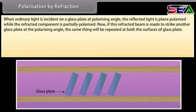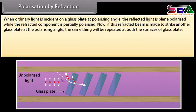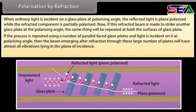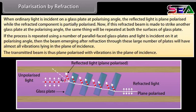Polarization by refraction. When ordinary light is incident on a glass plate at polarizing angle, the reflected light is plane polarized while the refracted component is partially polarized. Now if this refracted beam is made to strike another glass plate at the polarizing angle, the same thing will be repeated at both the surfaces of glass plate. If the process is repeated using a number of parallel phased glass plates and light is incident on it at polarizing angle, then the beam emerging after refraction through these large number of plates will have almost all vibrations lying in the plane of incidence. The transmitted beam is thus plane polarized with vibrations in the plane of incidence.